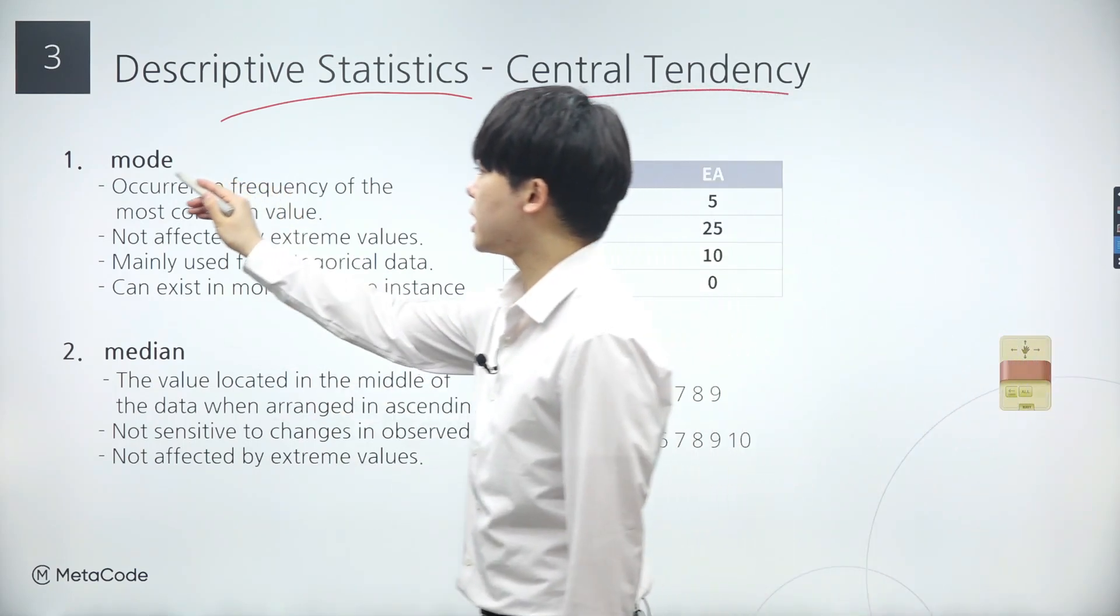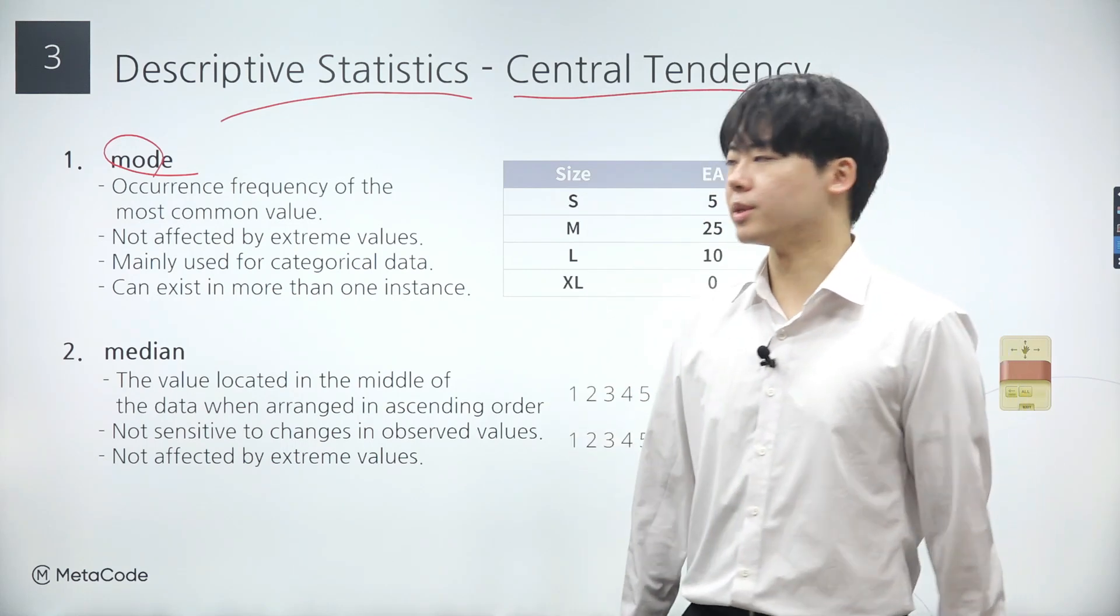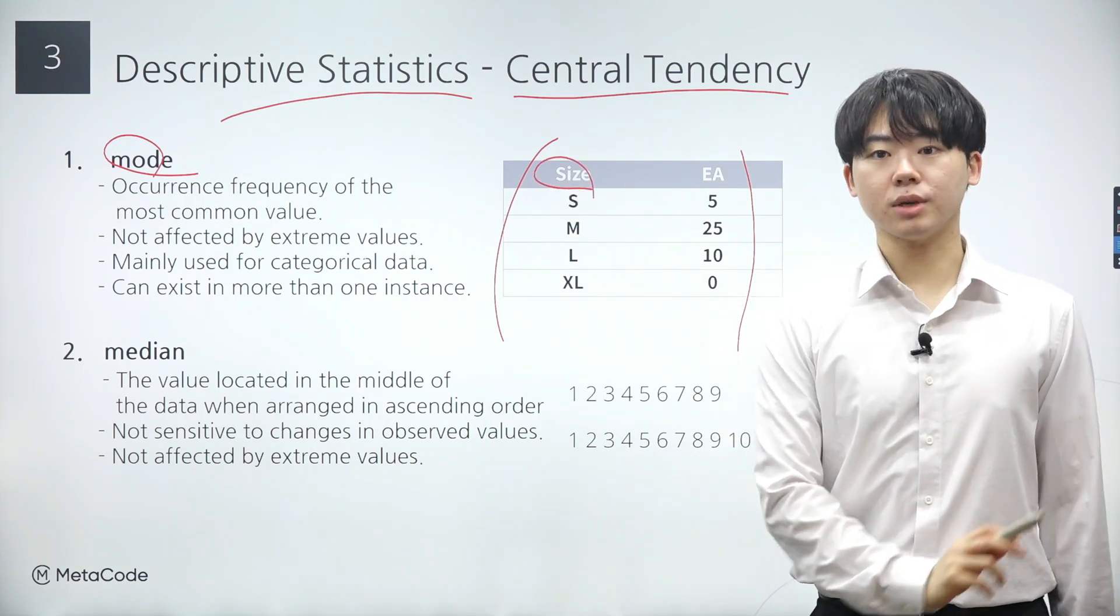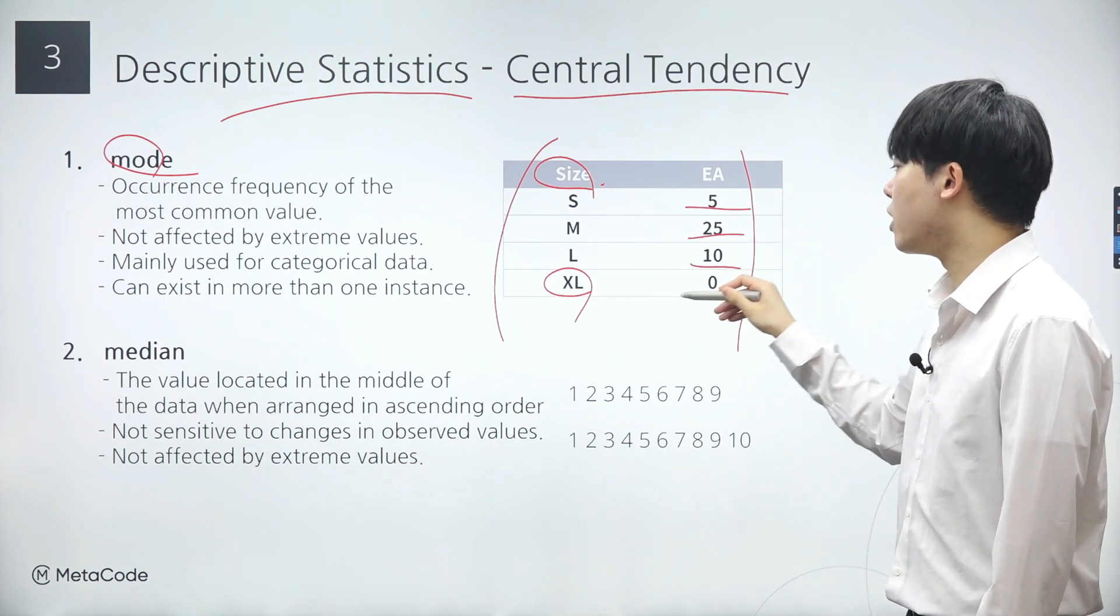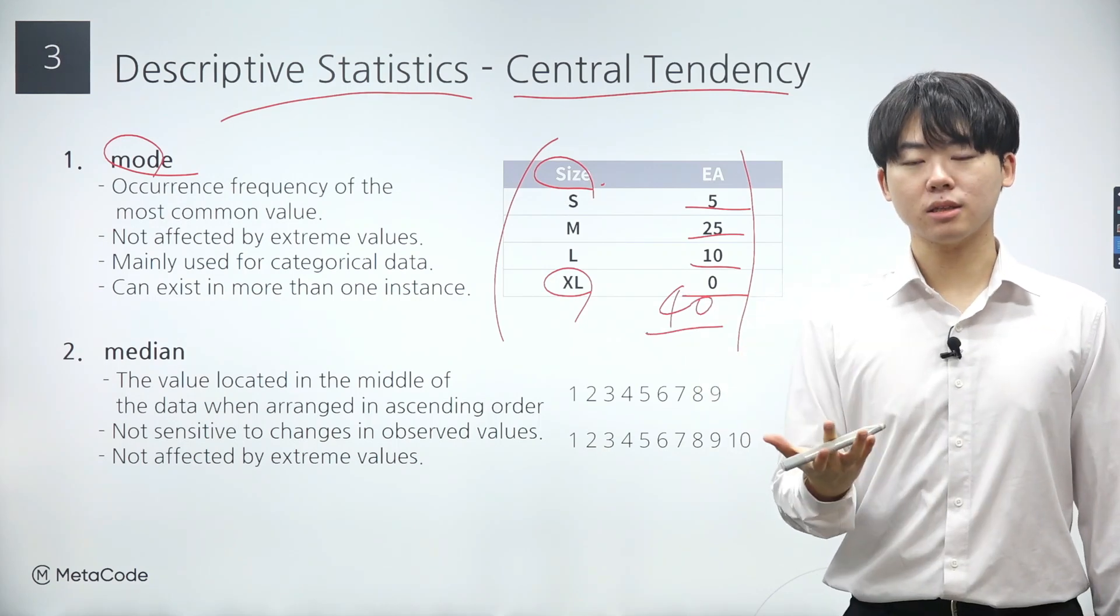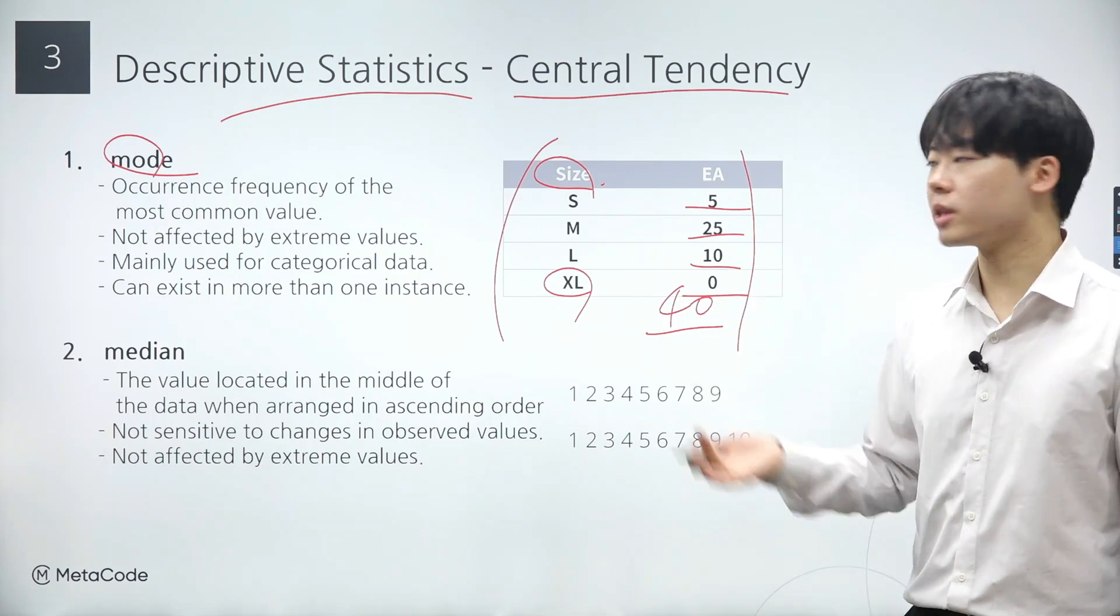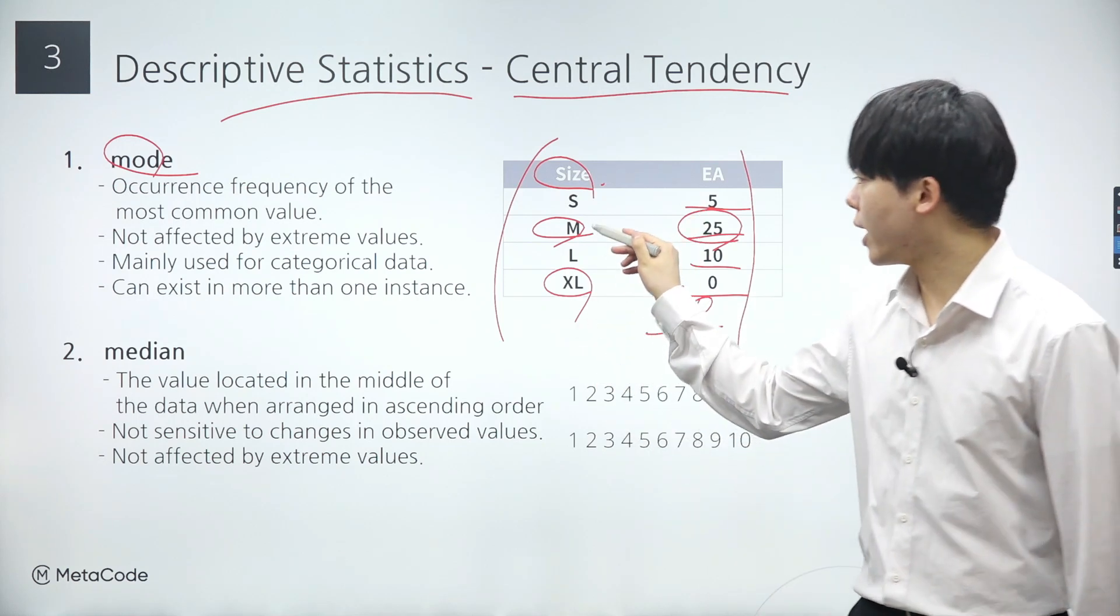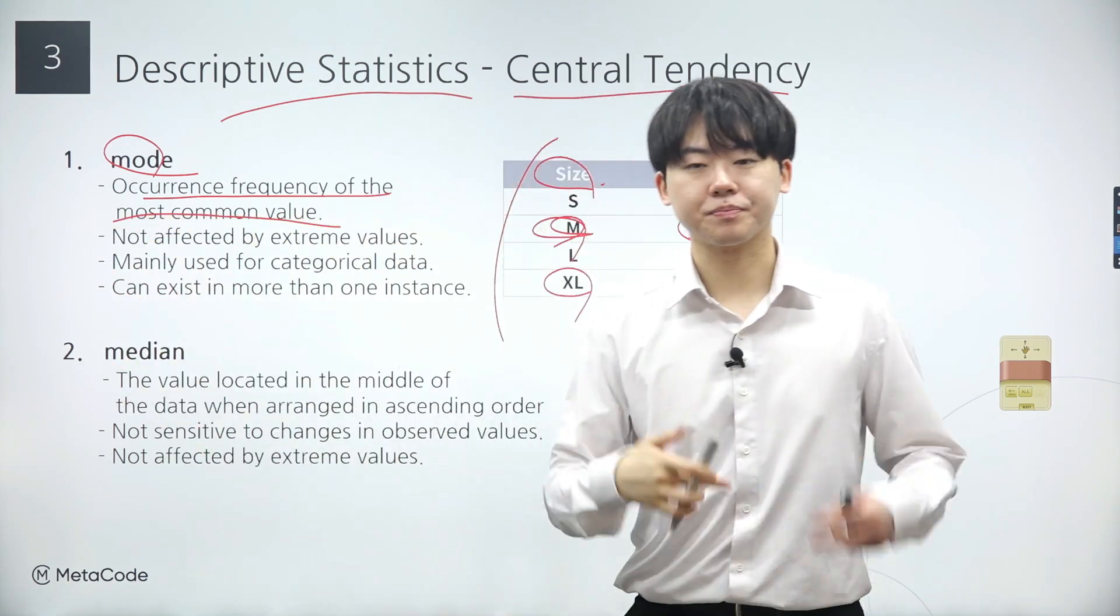Let's start with the mode. The mode is simply the statistic that represents the most common value in a data set. Consider the table displayed here. Suppose in the first column, we have shoe sizes ranging from small to extra large, and in the second column, we have the corresponding number of pairs of shoes sold. So out of a total of 40 pairs of shoes sold, which size is the most common? It's the medium size with 25 pairs sold. Therefore, the mode of this data set is the medium size. In summary, the mode is the value that appears most frequently in a data set.